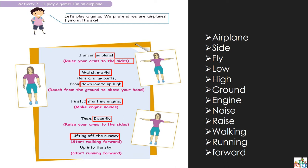With your hands and the sound that you're going to make, and then up into the sky. Alors qu'est-ce que vous allez faire ensuite? Vous allez start running forward — vous allez marcher ensuite vous allez courir. Running veut dire courir.